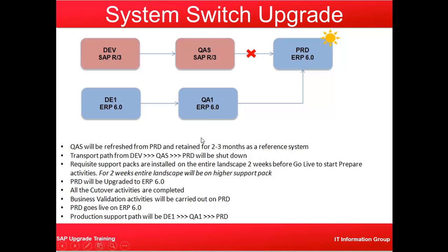Production will be upgraded to ERP 6.0, all cutover activities are completed, and business validation will be carried out on the production system. Production (PRD) goes live on ERP 6.0. The production support path will become DE1, QA1, and production PRD. This is how we plan the landscape migration and the transition from one landscape to another — from the older version to the newer upgraded system version. Thank you for joining and have a nice day.